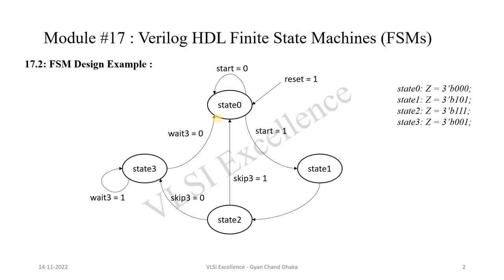Let's look at a Mealy/Murray type FSM example. We will cover the functionality first, then write the Verilog HDL code, then write the test bench. On reset assertion or when start is 0, we are always in state 0. As soon as start becomes 1 we go to state 1, and from state 1 we go to state 2 in the next clock cycle without any dependency. From state 2, depending on the skip3 signal, we enter state 0 or state 3 — if skip3 is 1, we skip state 3 and go directly to state 0.